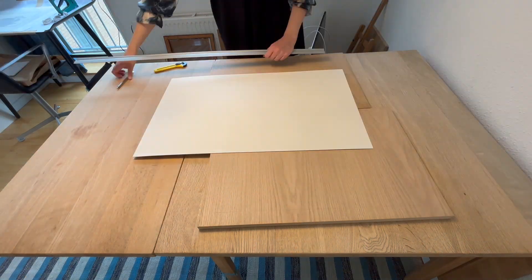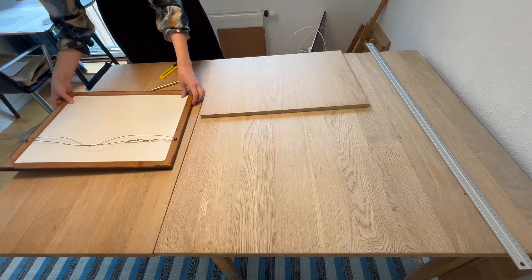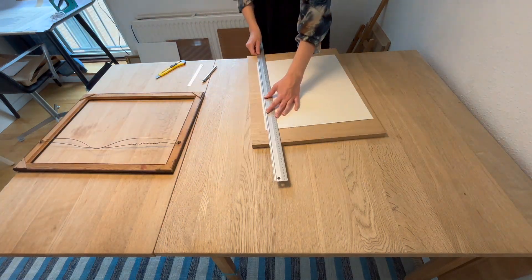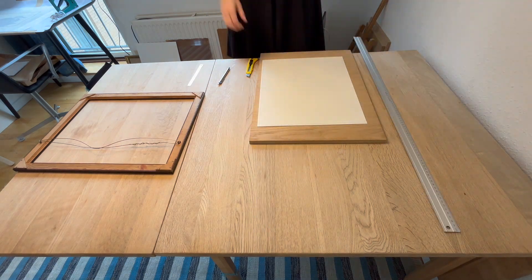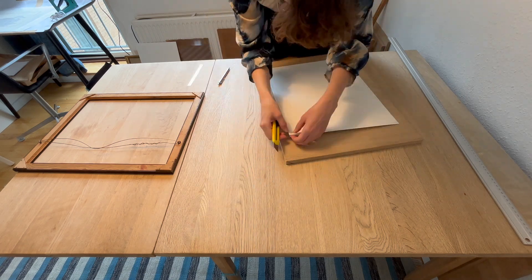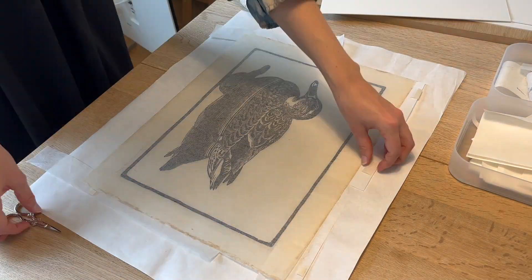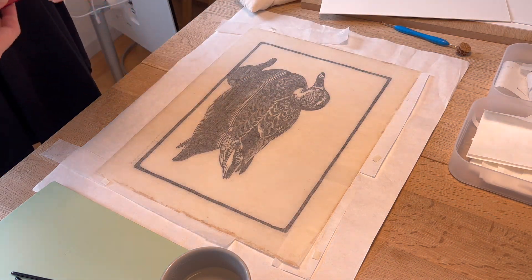The object should, of course, go back into its frame, but preferably not in the same way it was mounted before. I start by cutting a new piece of backing board and a spacer that fits inside the frame. The spacer ensures that the object won't sit directly against the glass again.